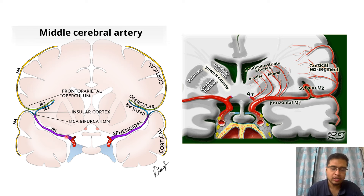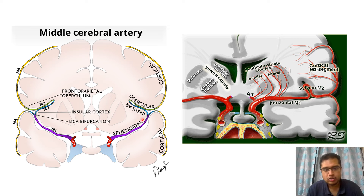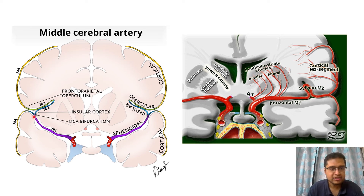The middle cerebral artery has four important segments. M1 is the horizontal segment within the sylvian fissure, from which multiple lenticulostriate arteries arise supplying the capsuloganglionic region and responsible for lacunar infarcts. M1 then divides into superior and inferior trunks. M2 is the insular segment lying in the insular cortex. M3 is the opercular segment. M4 lies superficial to the cortex in the parietal and temporal regions. These are the MCA segments commonly seen on angiography.